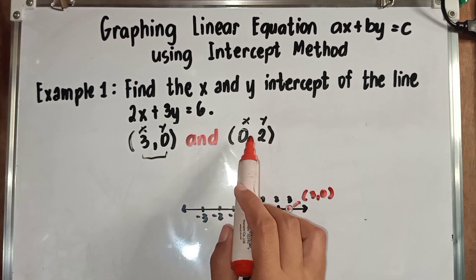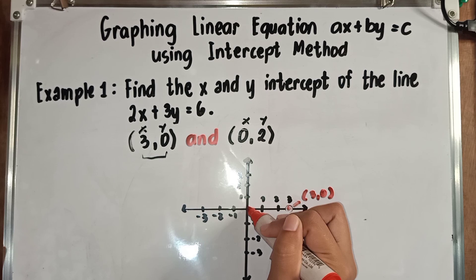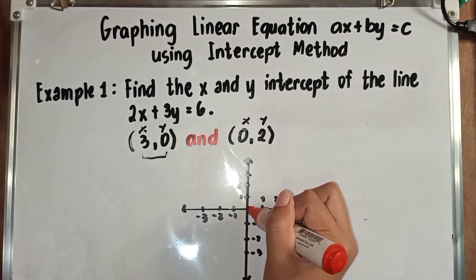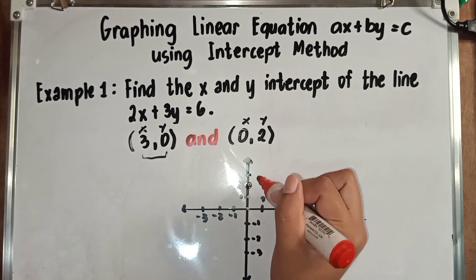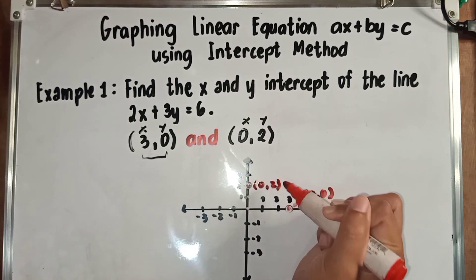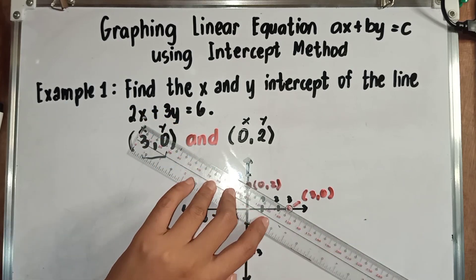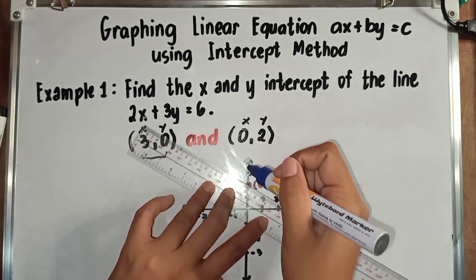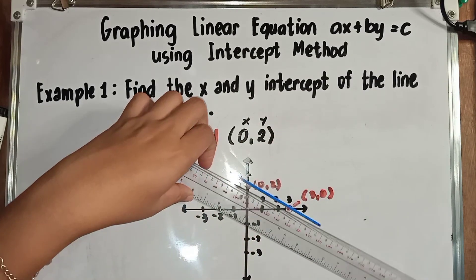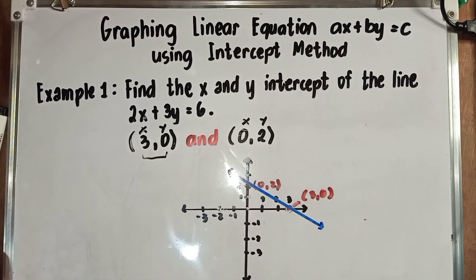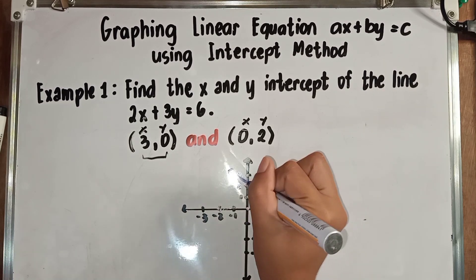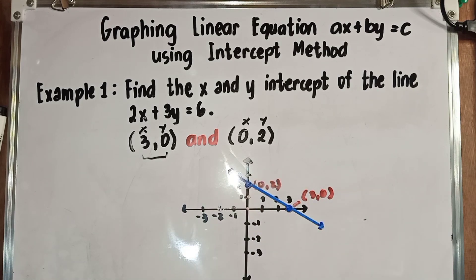Next, we proceed to (0, 2). X is 0 — so we are at the origin on the x-axis — then positive 2 for Y, meaning we jump 2 units up. So (0, 2) is plotted there. After that, what we are going to do is connect or graph — connect (0, 2) and (3, 0). Once you finish connecting, this will be your final answer. You are done with the solution, found the two ordered pairs, and graphed them. This is our final answer.